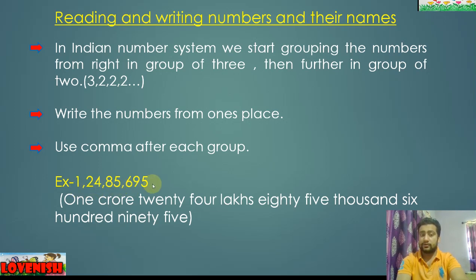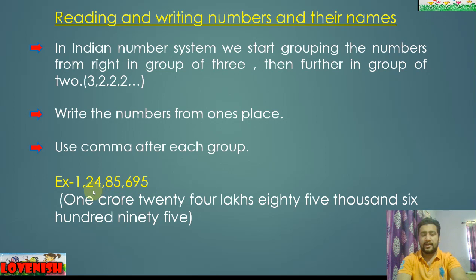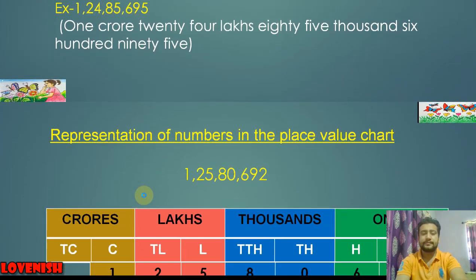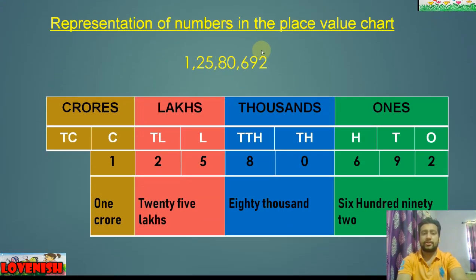That is the trick you will have to learn. So how can we read this number? That is one crore twenty-four lakh eighty-five thousand six hundred ninety-five. Now let us look at the representation of a number in the place value chart.